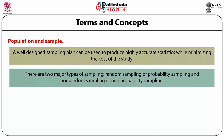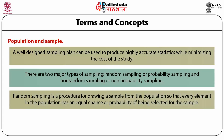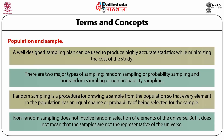There are two major types of sampling: random sampling or probability sampling, and non-random sampling or non-probability sampling. Random sampling is a procedure for drawing a sample from the population so that every element in the population has an equal chance or probability of being selected. Random sampling can be further classified as simple random, stratified random, systematic random, cluster, and multi-stage random sampling. Non-random sampling does not involve random selection of elements, but this does not mean the samples are not representative of the universe. Examples of non-random sampling techniques are accidental, quota, or snowball sampling.